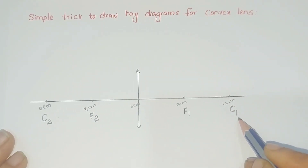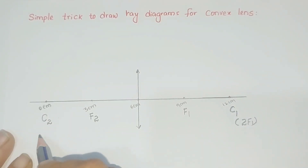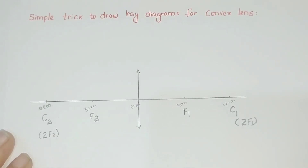The center of curvature C1 can also be written as 2F1, and the center of curvature C2 can also be written as 2F2. This is the simple trick to draw a ray diagram for a convex lens.